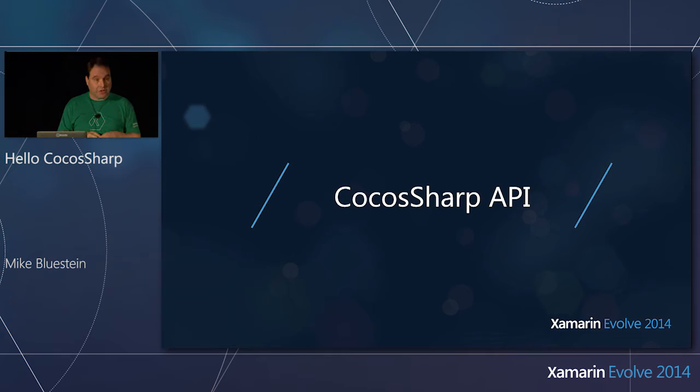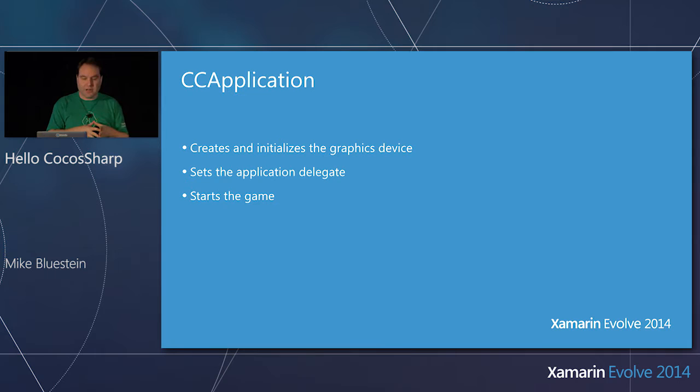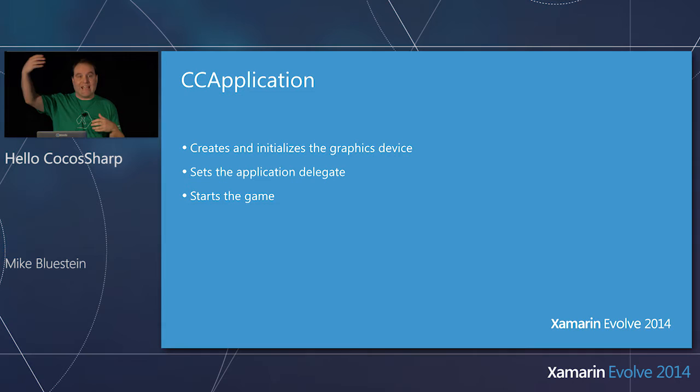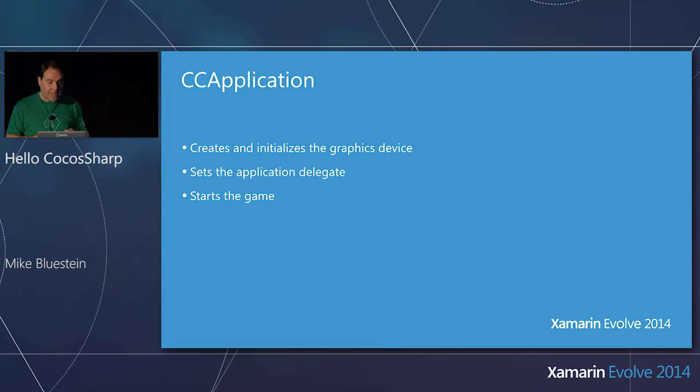So we're going to tour the API. When you start off with CocosSharp, the entry to the kingdom is a CC Application. CC Application takes care of creating and initializing the graphics device for you, so you don't have to get down into the minutiae of handling that. It sets up something called an application delegate, which manages initialization code and application-wide callbacks like going into the background.